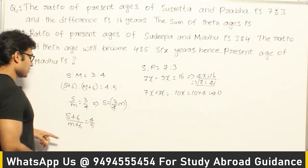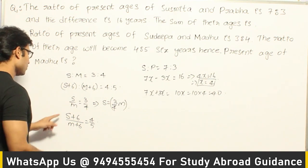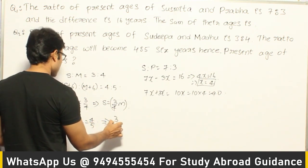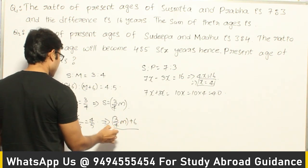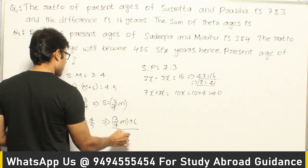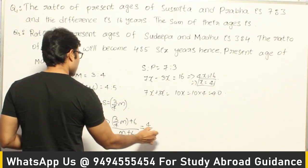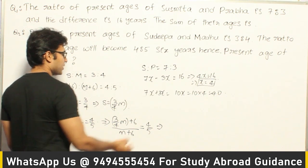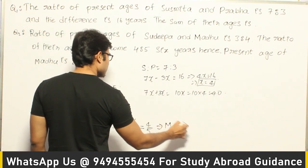In place of S you can substitute 3 by 4 M. Then what you get is: 3 by 4 M plus 6, divided by M plus 6, equal to 4 by 5. Now if you cross multiply this and solve for M, you are going to get M equal to 24 years.